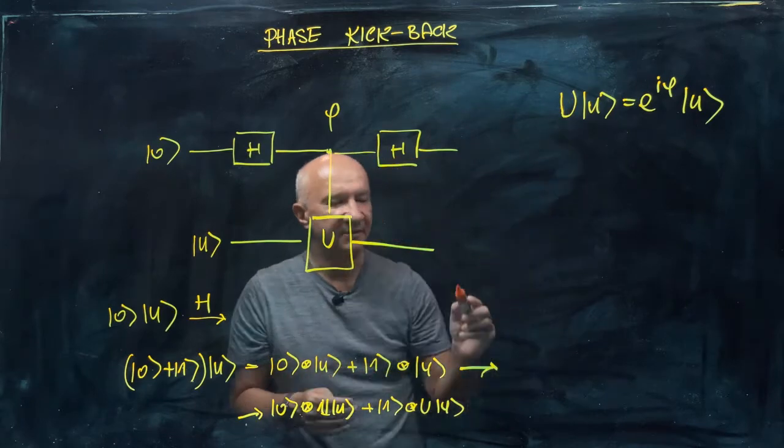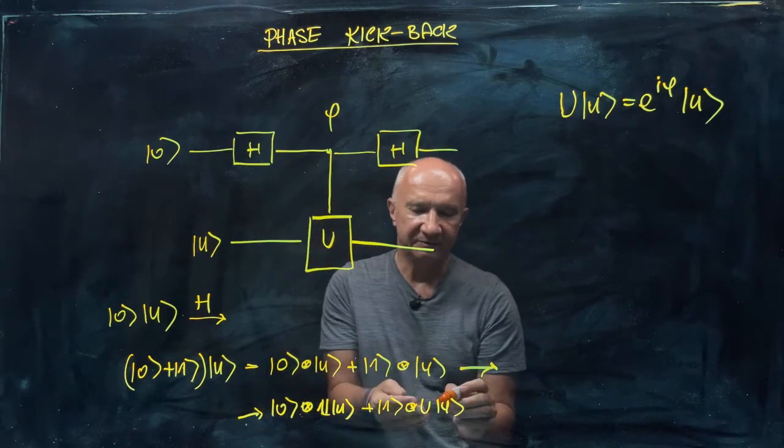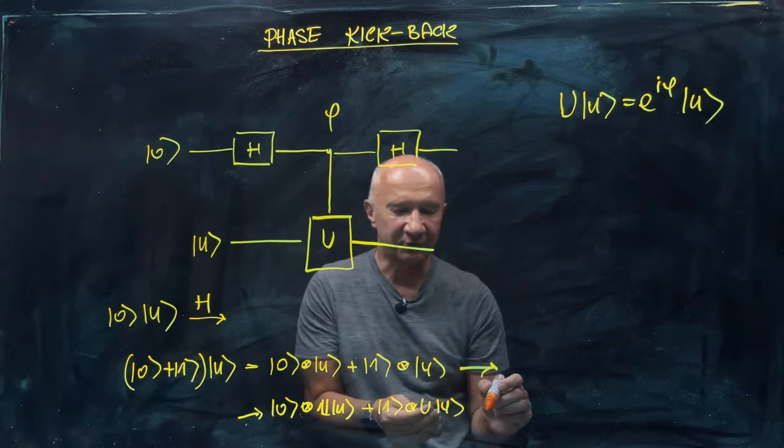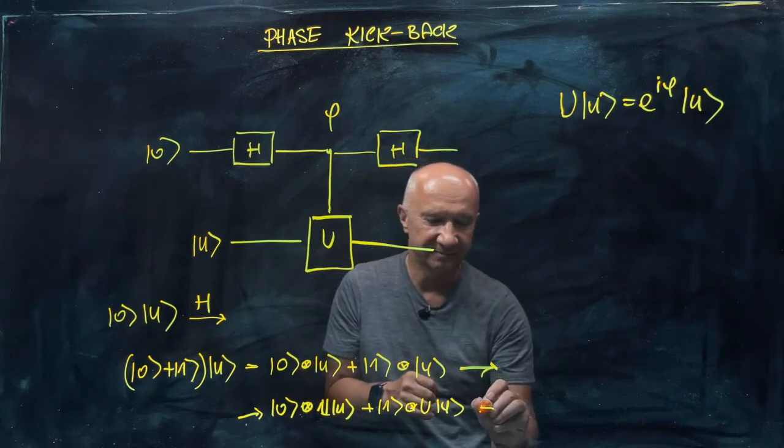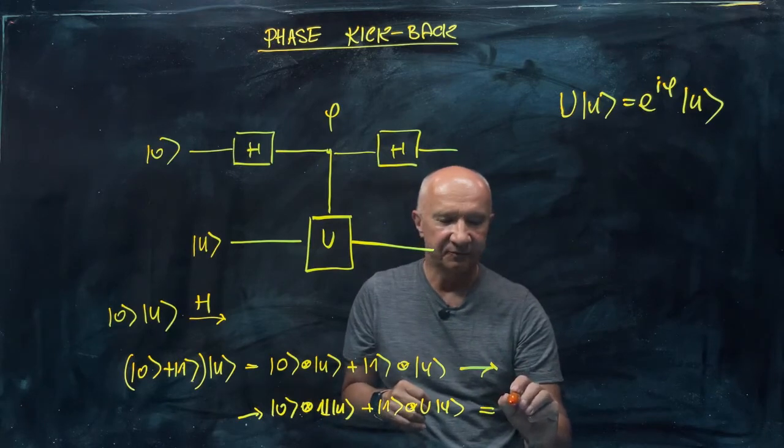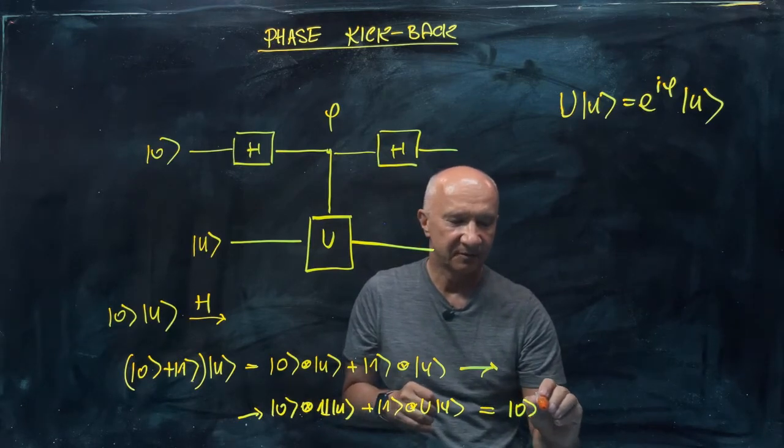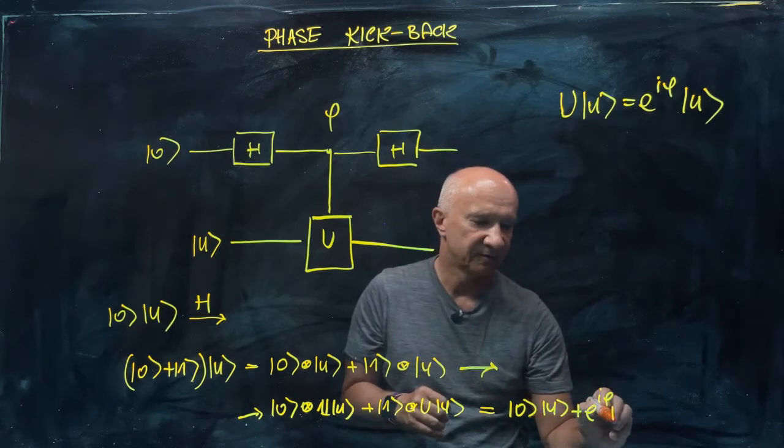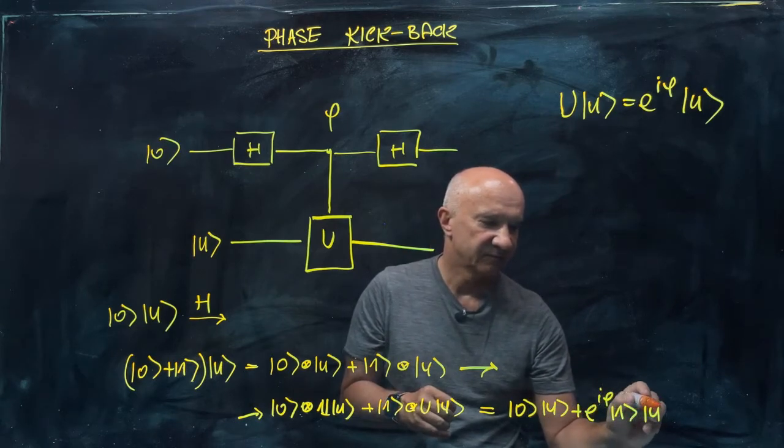Now, this unitary here acting on this eigenstate U gives you a phase factor. So just wrapping this up, you can see that this gives you zero U plus e to the i phi one vector U.